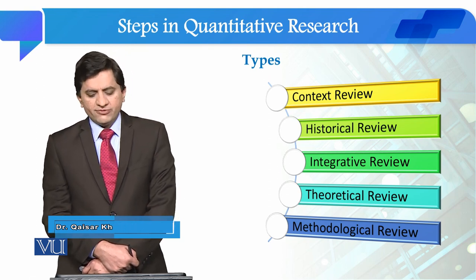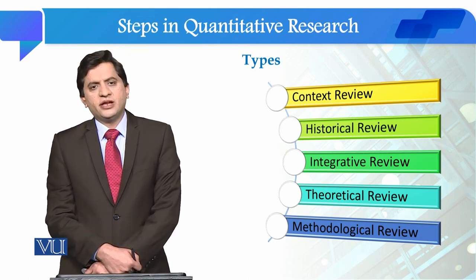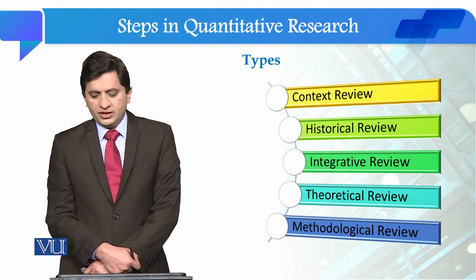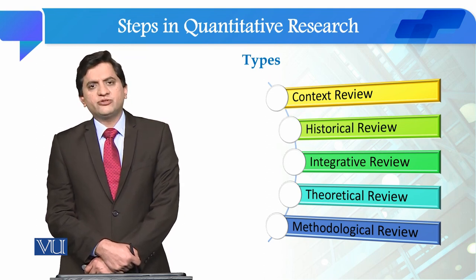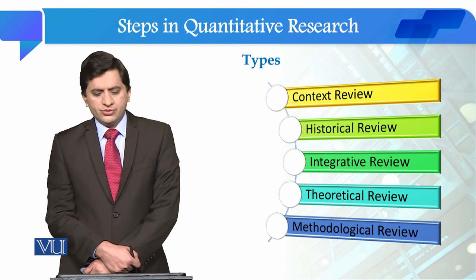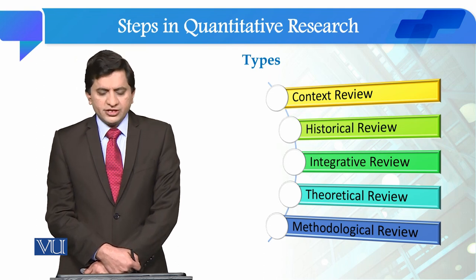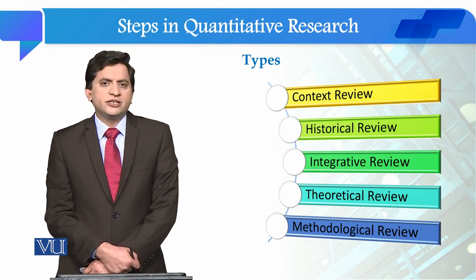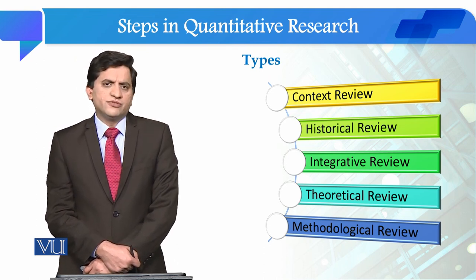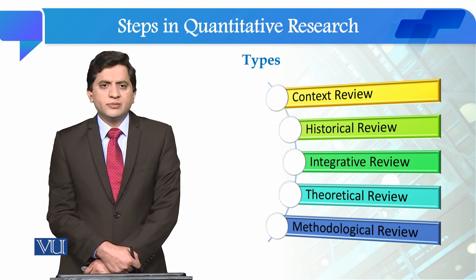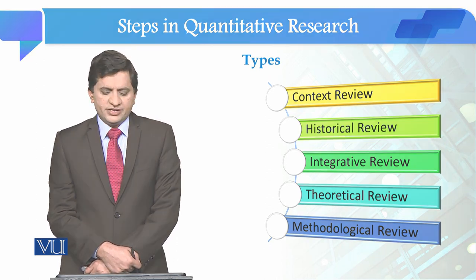The main types of literature review are 5 types. They are: Context Review, Historical Review, Integrative Review, Theoretical Review, and Methodological Review. Now we will see these different types.